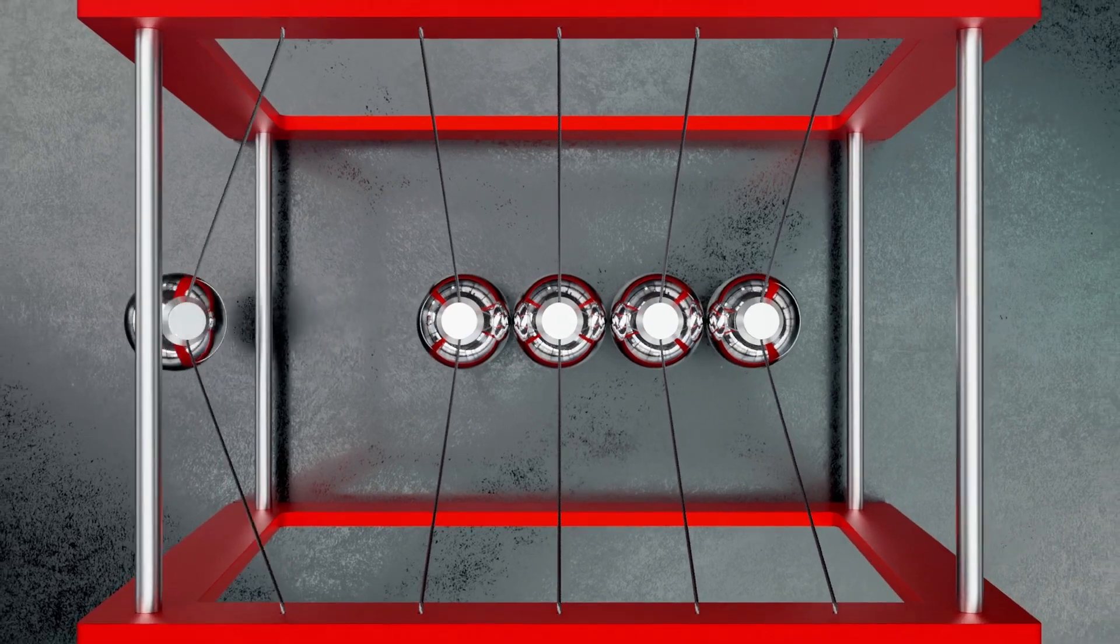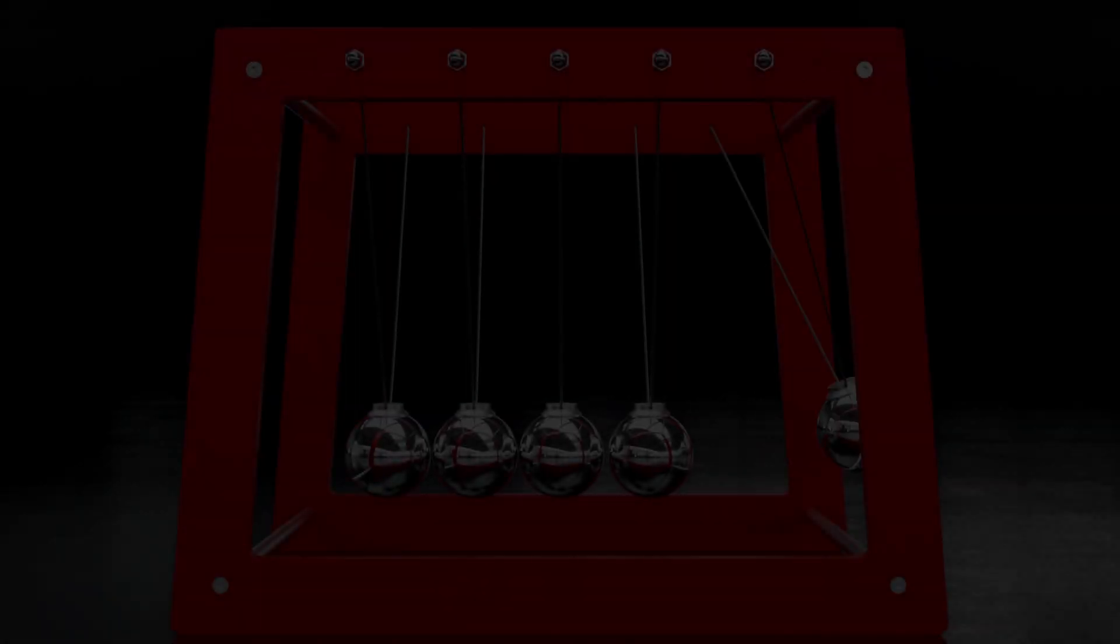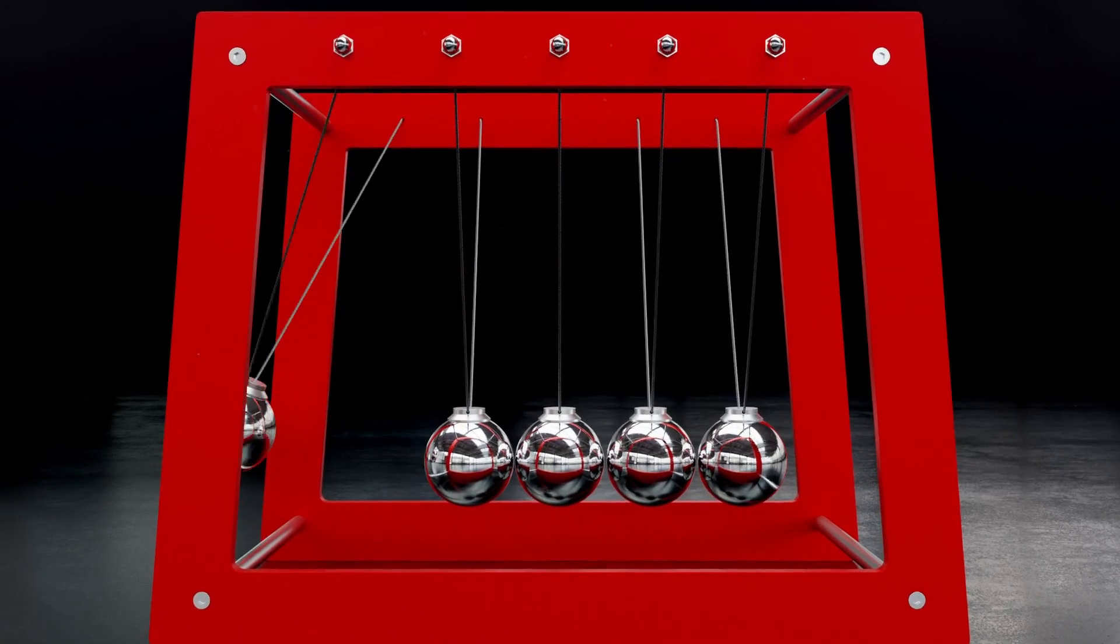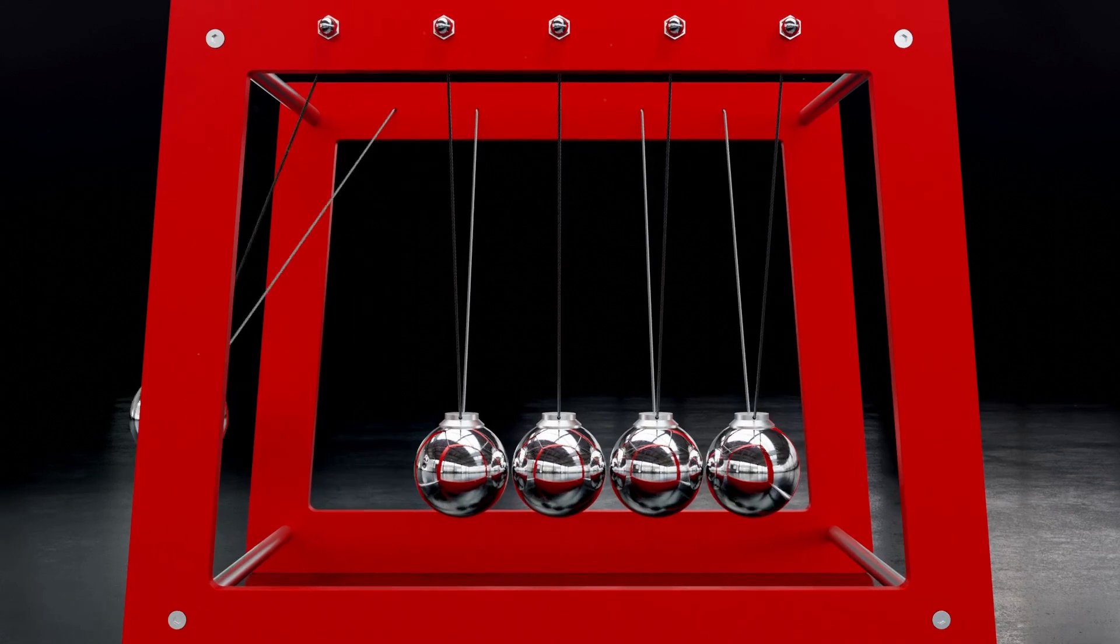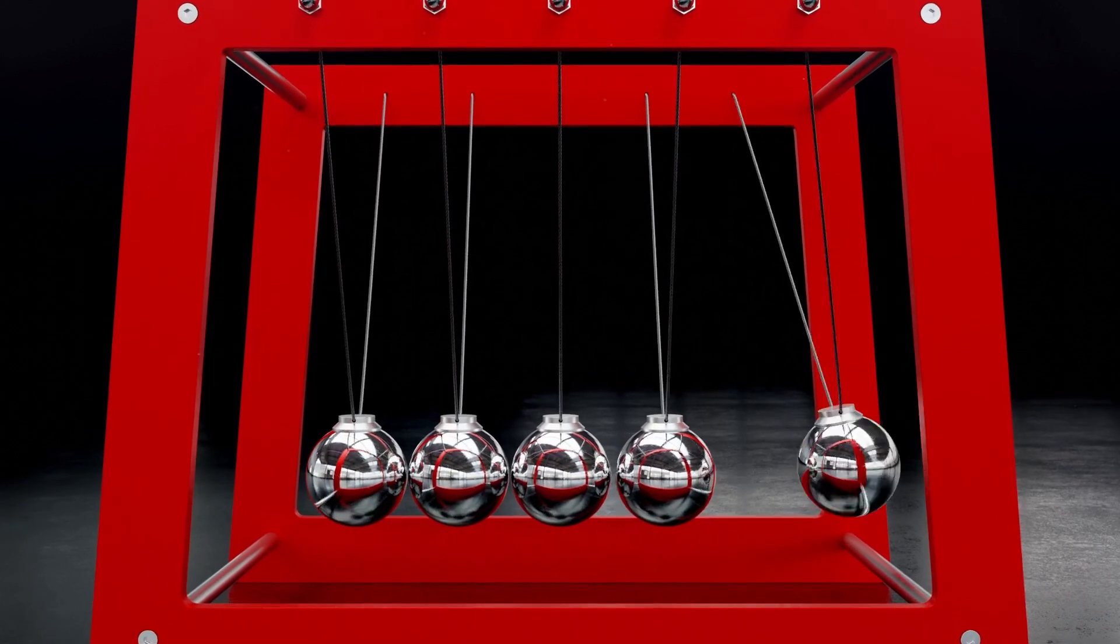The last sphere acquires most of the velocity of the first ball and swings in an arc almost as high as the release height of the first ball. This shows that the last ball receives most of the energy and momentum of the first ball.